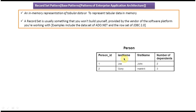To explain the Record Set design pattern, I have taken a Person table. This Person table has four columns: Person ID, Last Name, First Name, and Number of Dependents. It has two rows — the first row represents Joe's information and the second row represents Goni's information. Using a Record Set, we can represent this tabular data in memory.